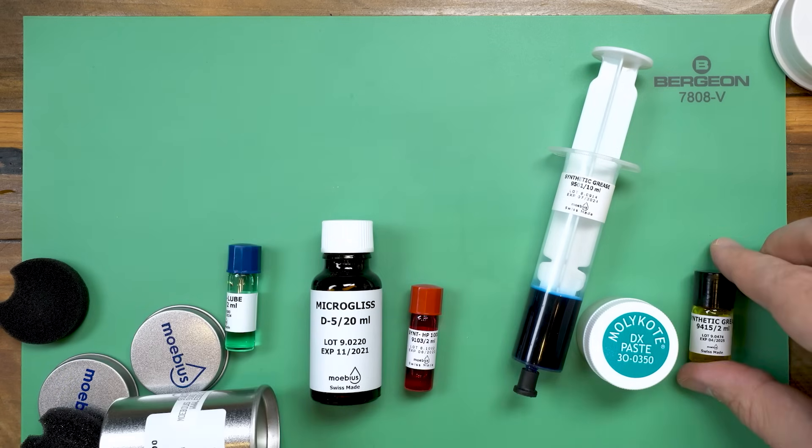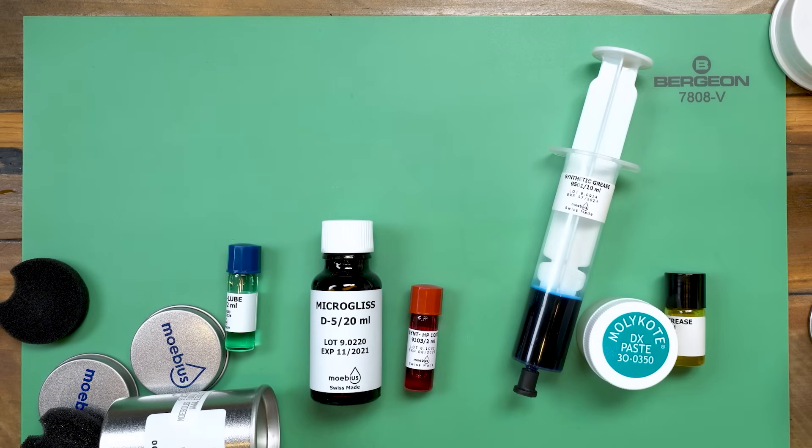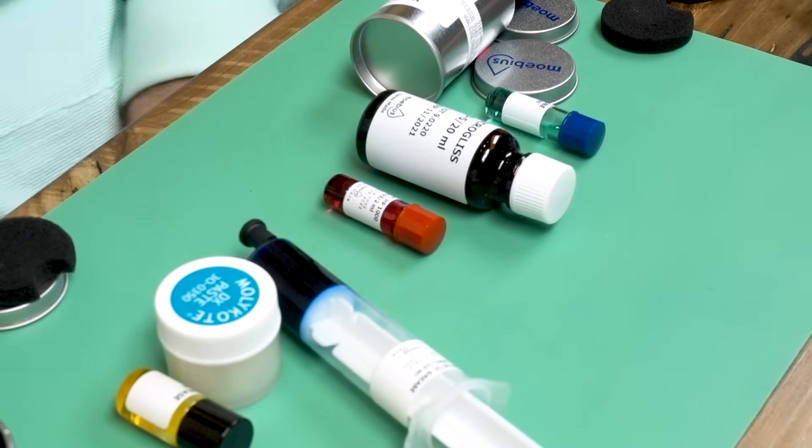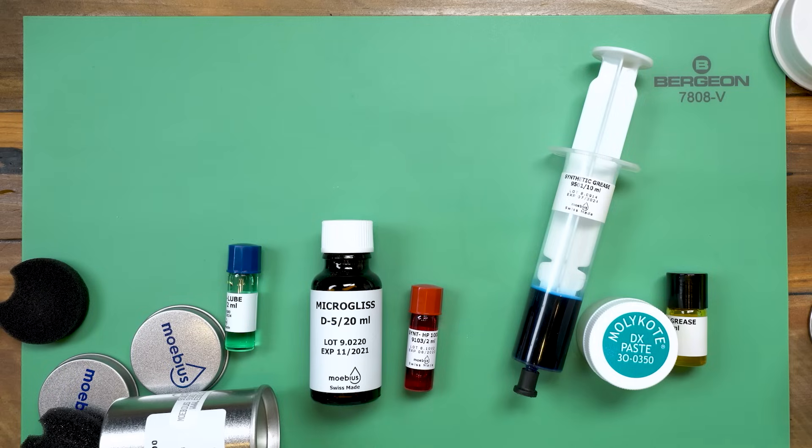Nobody ever said watchmaking was cheap. As you can see, even if you go with the less expensive option, you're looking at about $100 just for the lubricants to do the basic oiling on a watch.